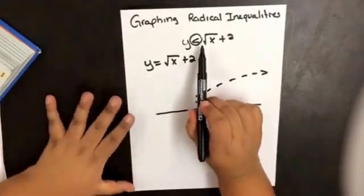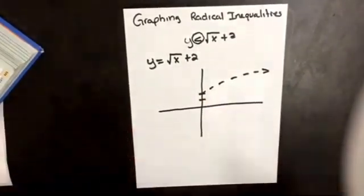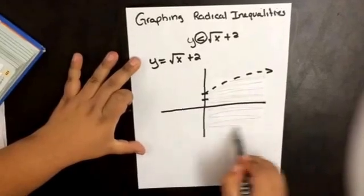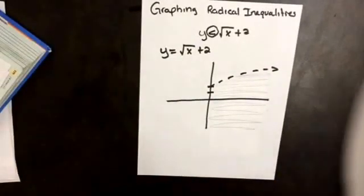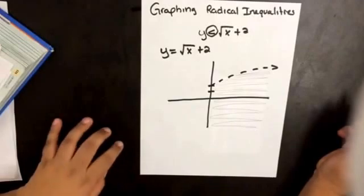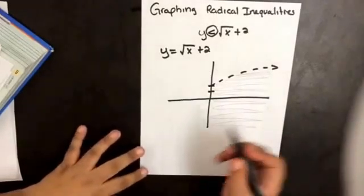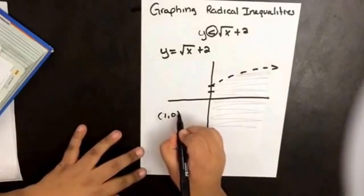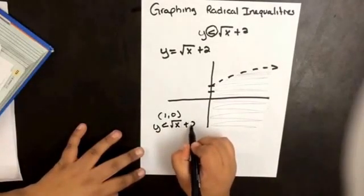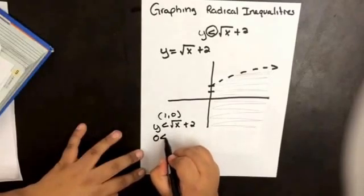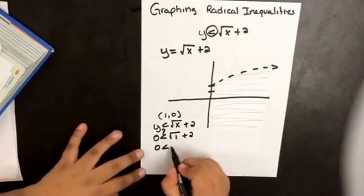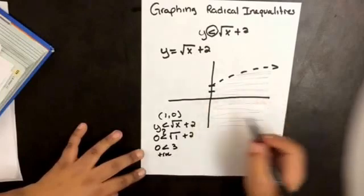Our inequality says less than, so we're going to shade the values below our curve. We want to check a point, so let's check (1, 0). For our inequality we have y is less than the square root of x plus 2, so 0 is less than the square root of 1 plus 2, which gives 0 is less than 3. That's true, so the area that we shaded is correct.